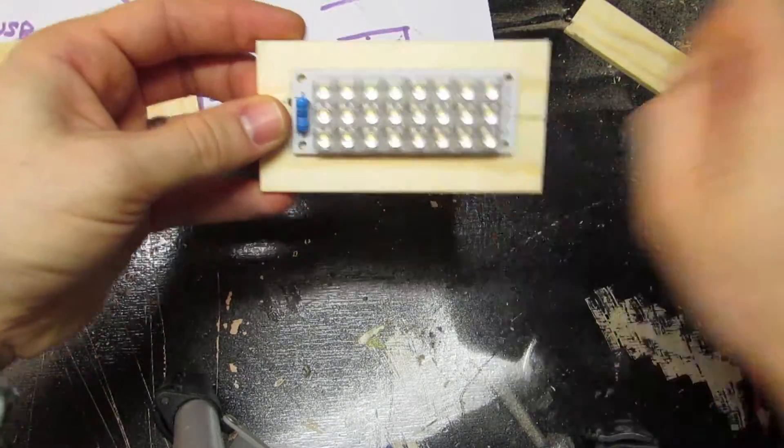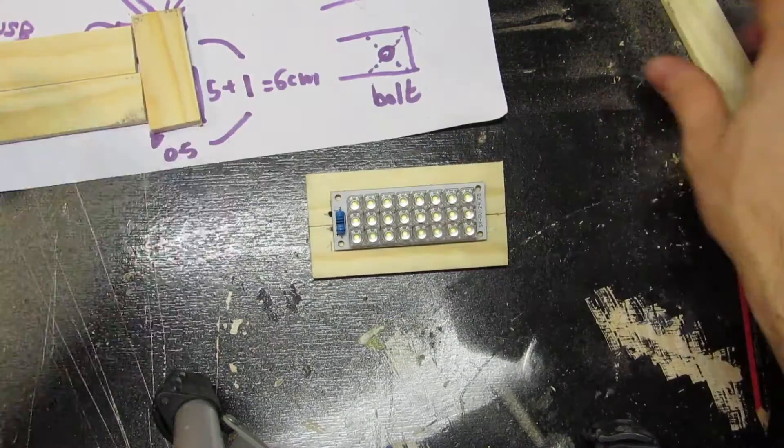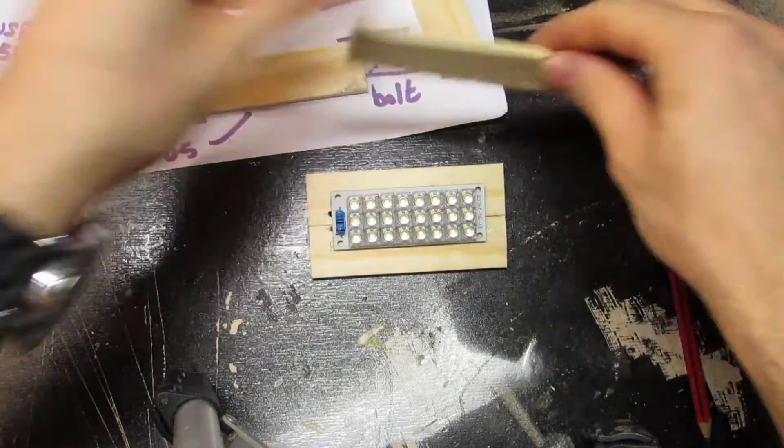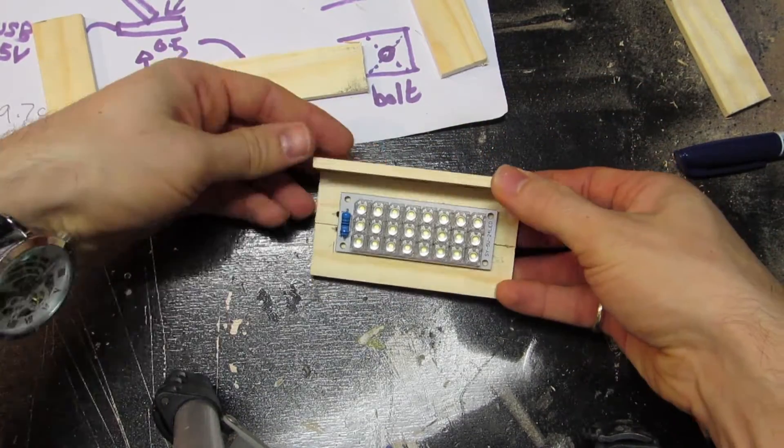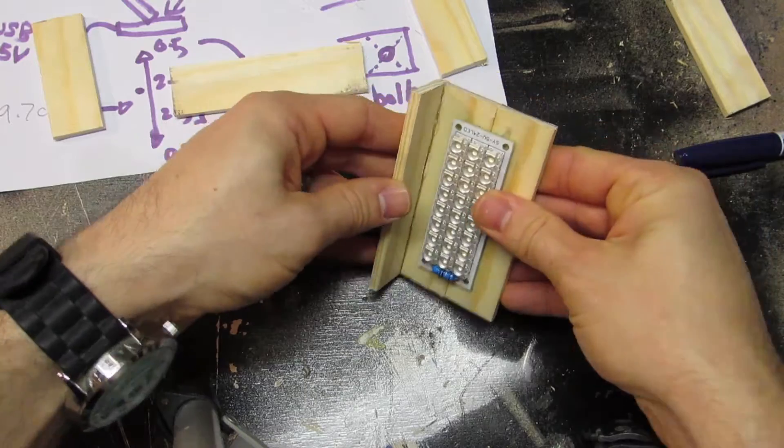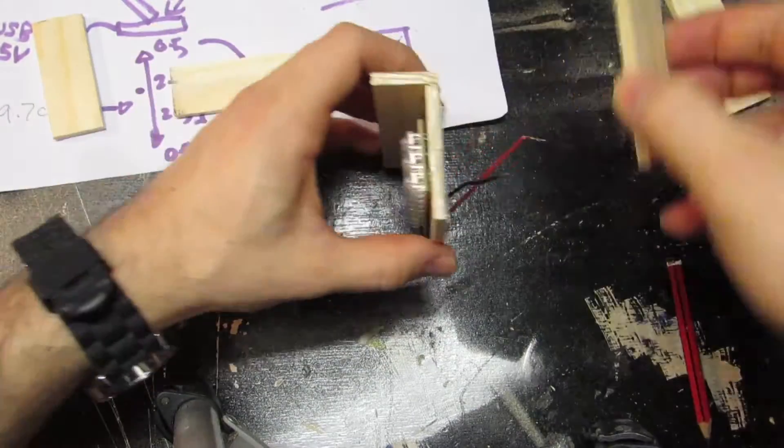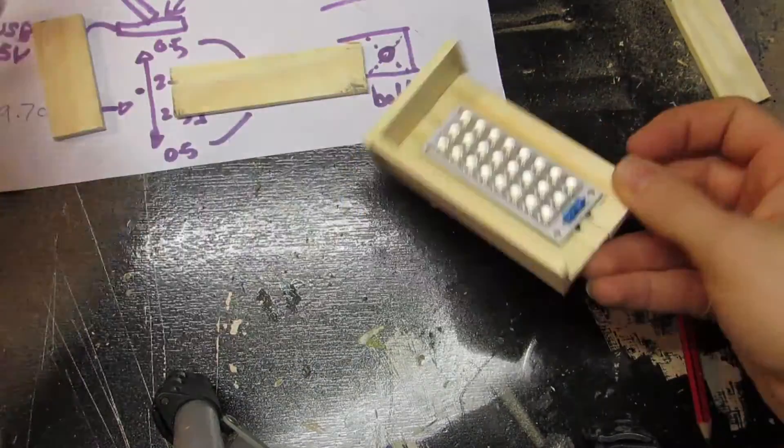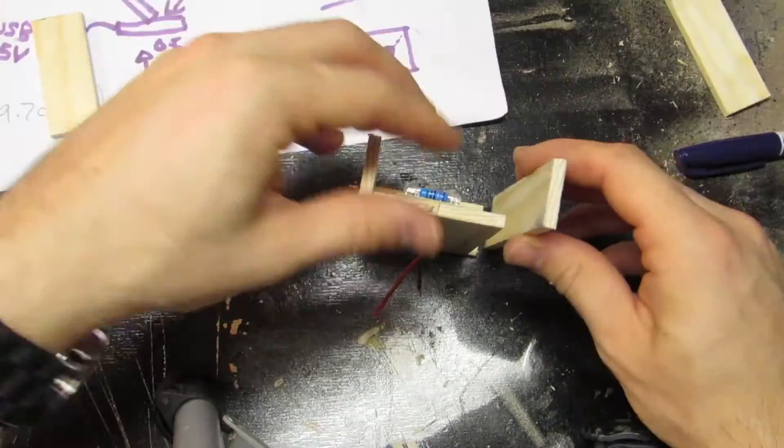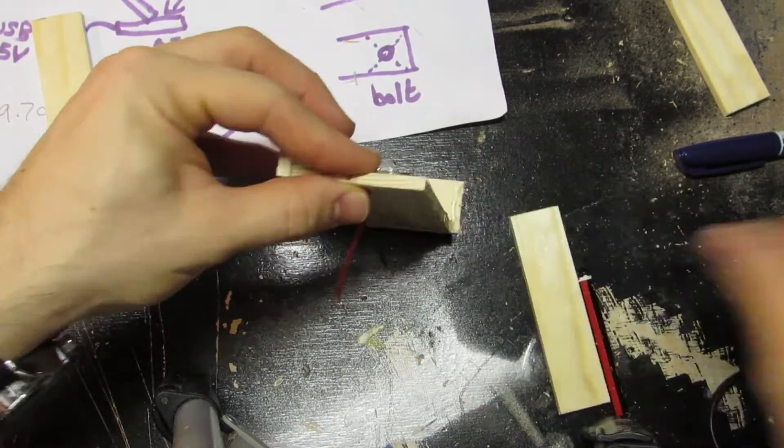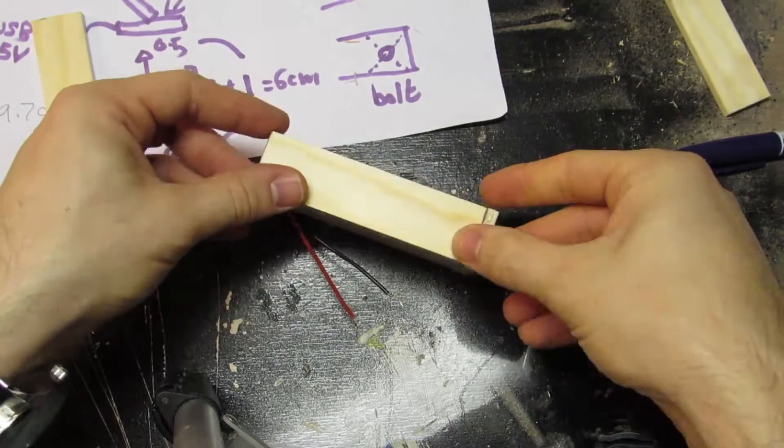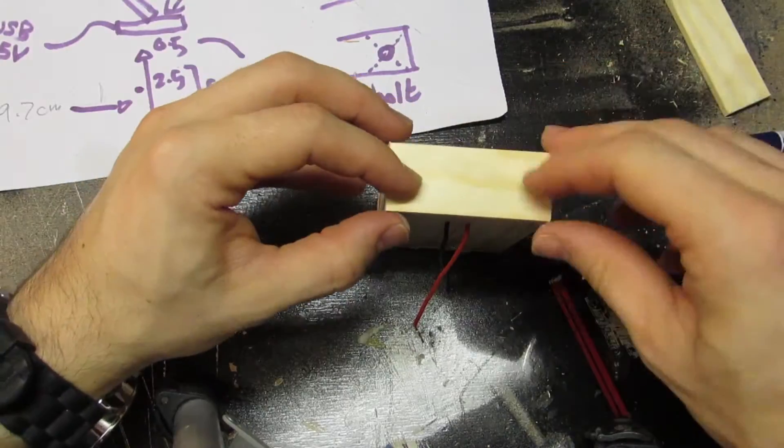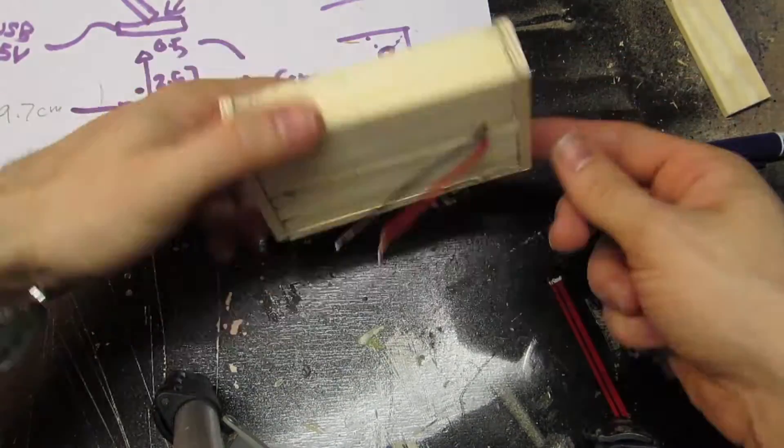Once you've done that it's time to construct the remainder of the head. Take one of your longer pieces, hot glue just along the edge and attach it to the top of your head. Then take your shorter pieces and attach one to either side of the long piece we just joined. Try to smooth off or remove any excess hot glue as it will give your project a slightly smarter finish. And that's the head completed.